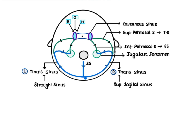This is the cavernous sinus. You can see one is on the right side and another on the left side — that means these are two, so they are paired. Then we see the superior petrosal sinus going towards the transverse sinus. Here you can see the right part of the superior petrosal sinus and the left part, so these are paired ones. Then you see the inferior petrosal sinus — this is the right part and this is the left part.